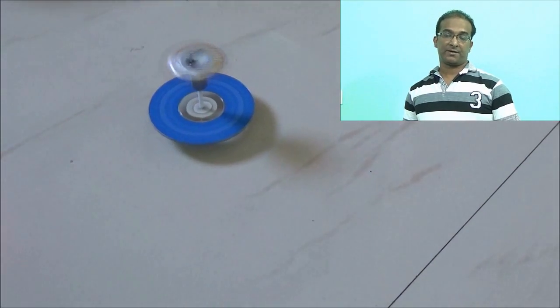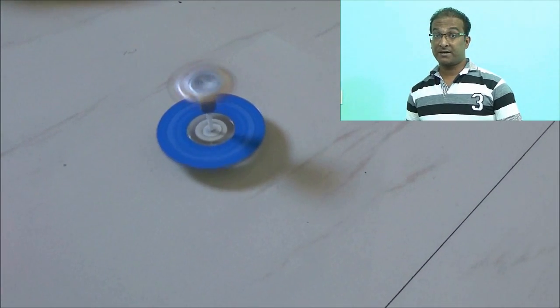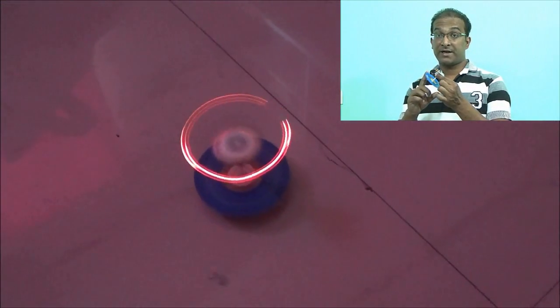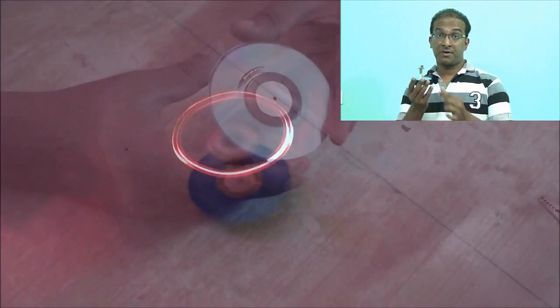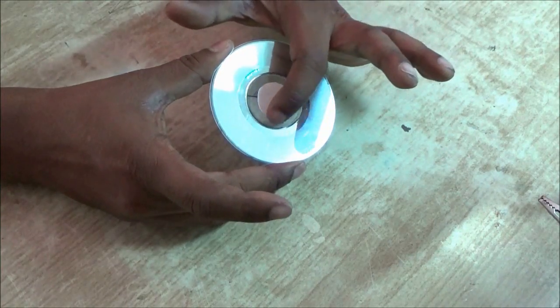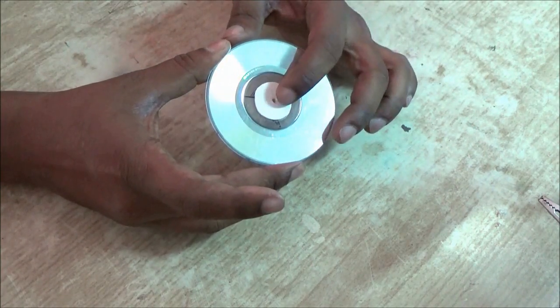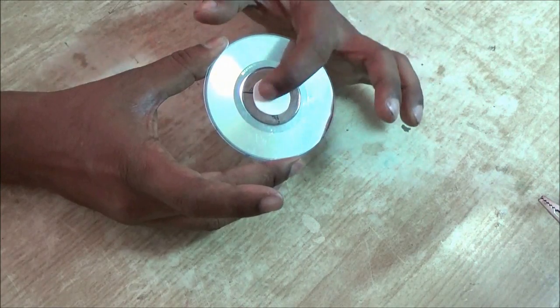Hi guys, welcome again. Today I will be making a very simple electronic toy. Let's make it. You need a small CD. At the center hole, I have glued a plastic piece and made a hole at the center.